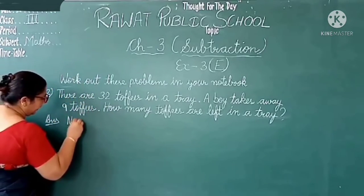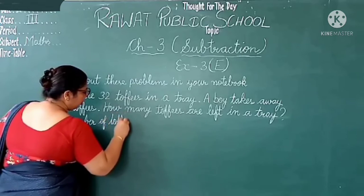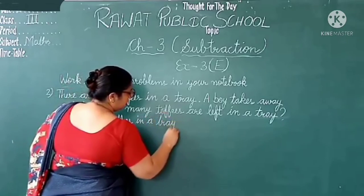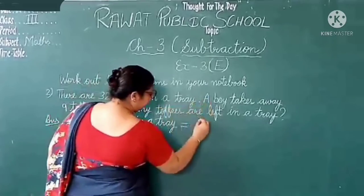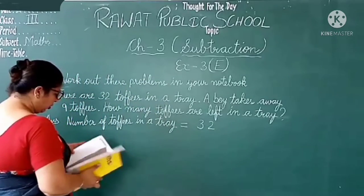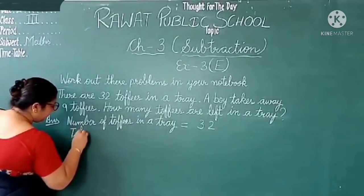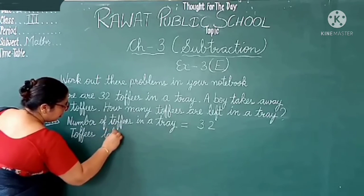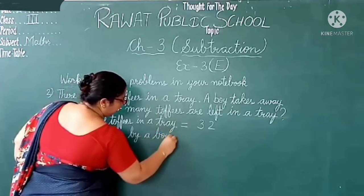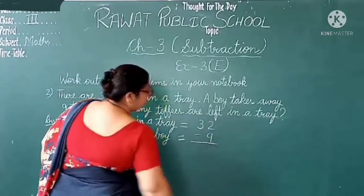Number of toffees in a tray is 32. Toffees taken by the boy — how many toffees did the boy take? 9 toffees. So we subtract 9 from 32.